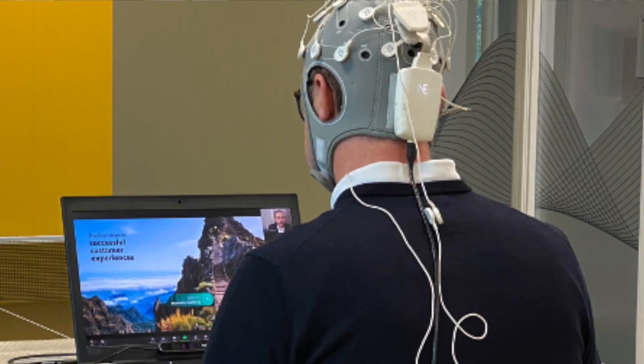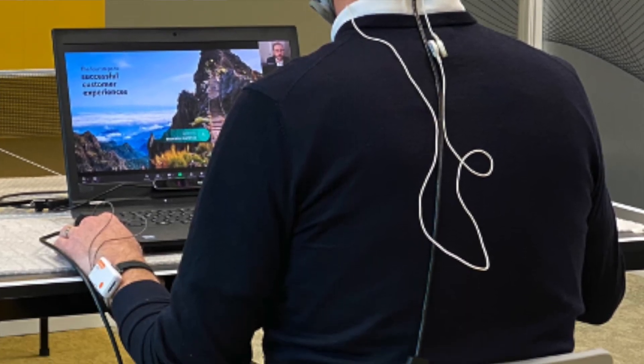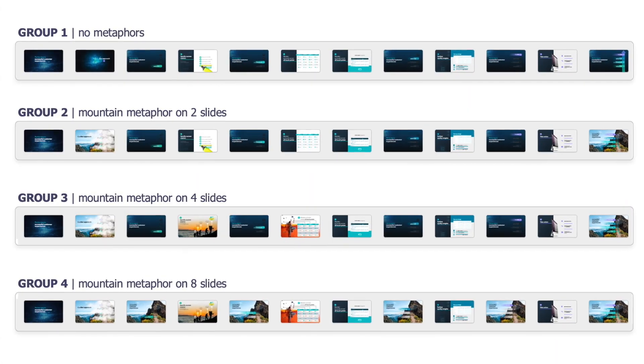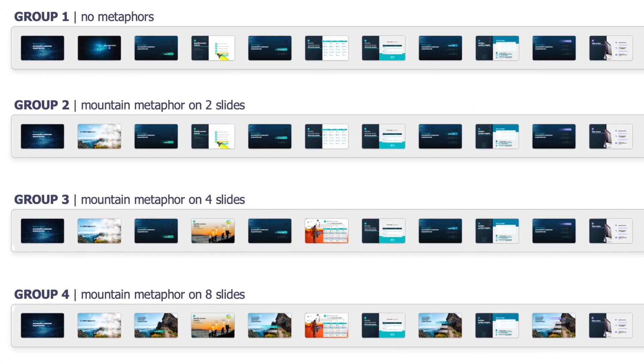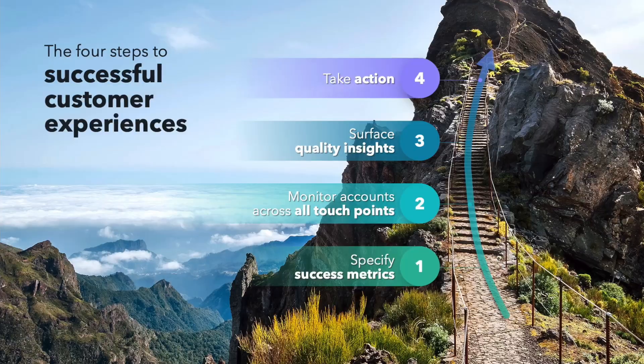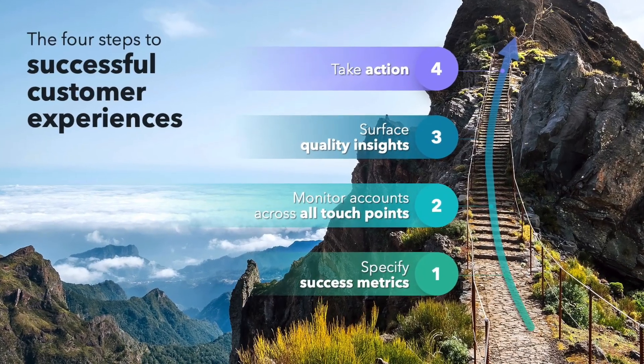During the study, I divided buyers into 4 groups and had them watch a presentation related to a software platform that promised 4 steps to customer success. Group 1 was exposed to no metaphors, and the rest of the groups were exposed to an increasing number of metaphors on the same theme — mountaineering. I chose this metaphor because an industry survey conducted prior to the neuroscience study revealed that mountain metaphors were the most popular in business content.